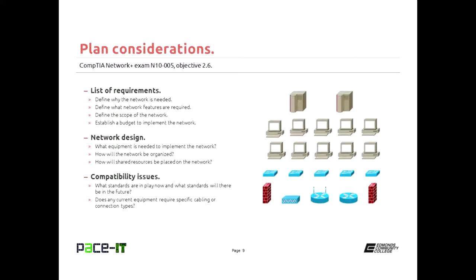The next step is to actually get down and do the design. You're going to need to figure out what equipment is going to be needed to implement that network. You should specify it down as far as you can, up to and including model numbers whenever possible. Then you need to figure out how that network is going to be organized. You need to figure out where the equipment is going to be placed. Where are the servers going to be kept? Where are the switches going to be placed? Where are the routers? So on and so forth.